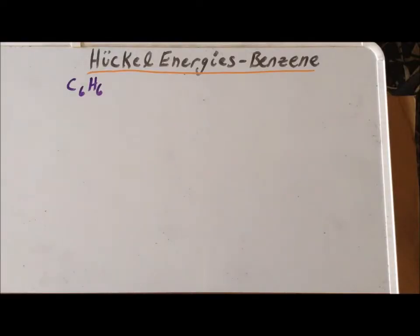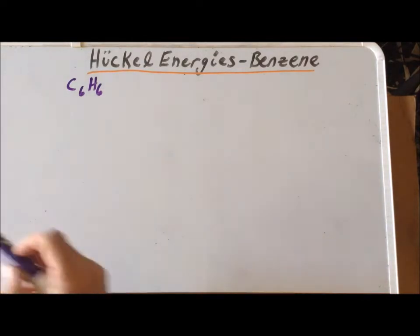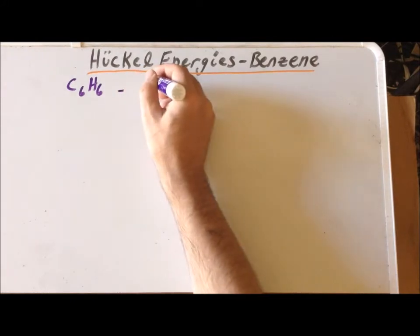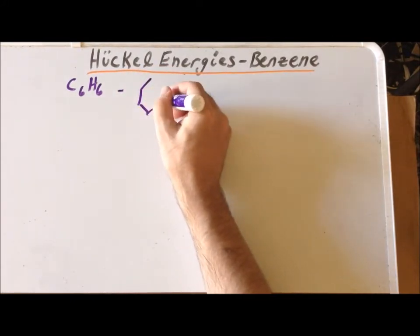In this video, we are going to derive the energies of the pi orbitals of benzene using the Huckel method. Benzene, you'll recall, has the chemical formula C6H6, and its carbon atoms form a six-membered ring.